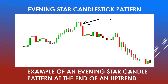This is another example of an evening star candle pattern at the end of an uptrend. This time we have a green candle, then a small red at the top, then a red to the right side of the pattern as shown with the arrow. We can see the trend changed totally from an uptrend to a downtrend.